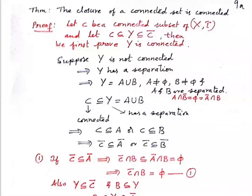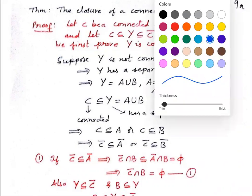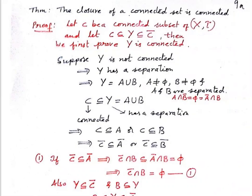We shall prove one more theorem on connected spaces: the closure of a connected set is connected. Let us take a topological space X-tau and let C be a connected subset of this topological space, and let Y be any subset in between C and C-bar. C-bar is the closure of C, and we have to prove that C-bar is connected.